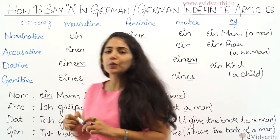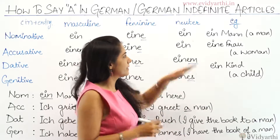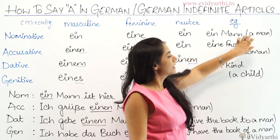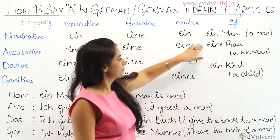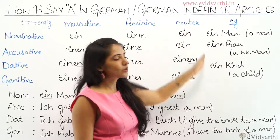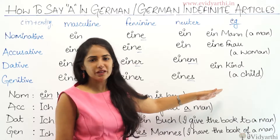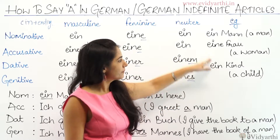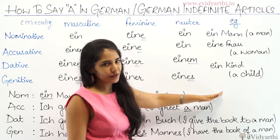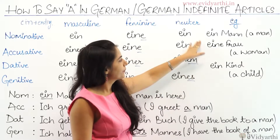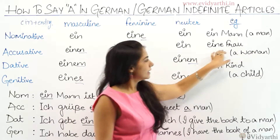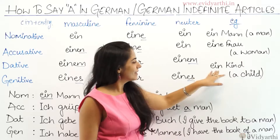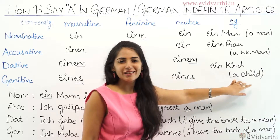Now some examples, all in nominative case — masculine, feminine, and neuter. 'Ein Mann' means 'a man'. 'Eine Frau' means 'a woman'. 'Ein Kind' means 'a child'.